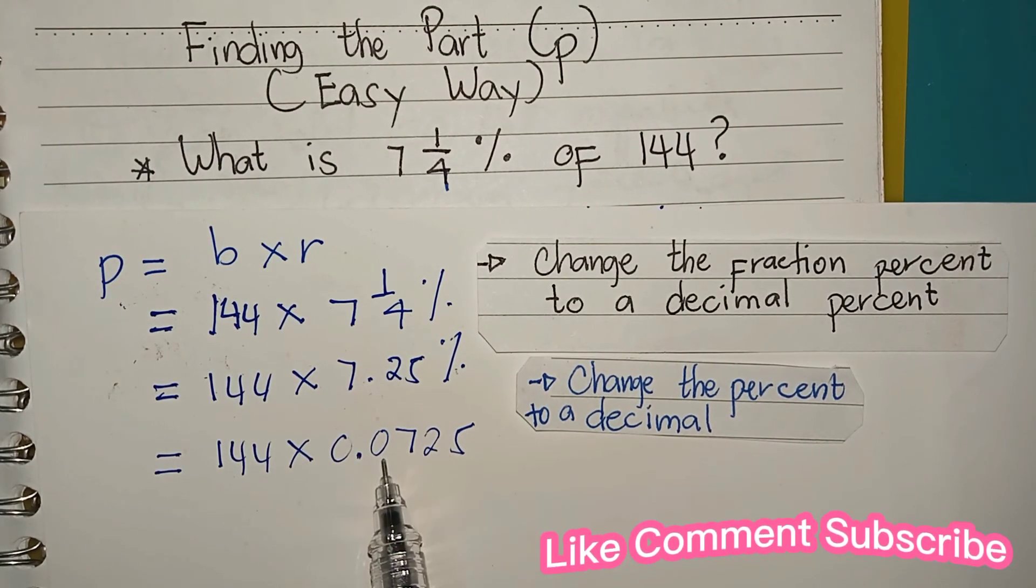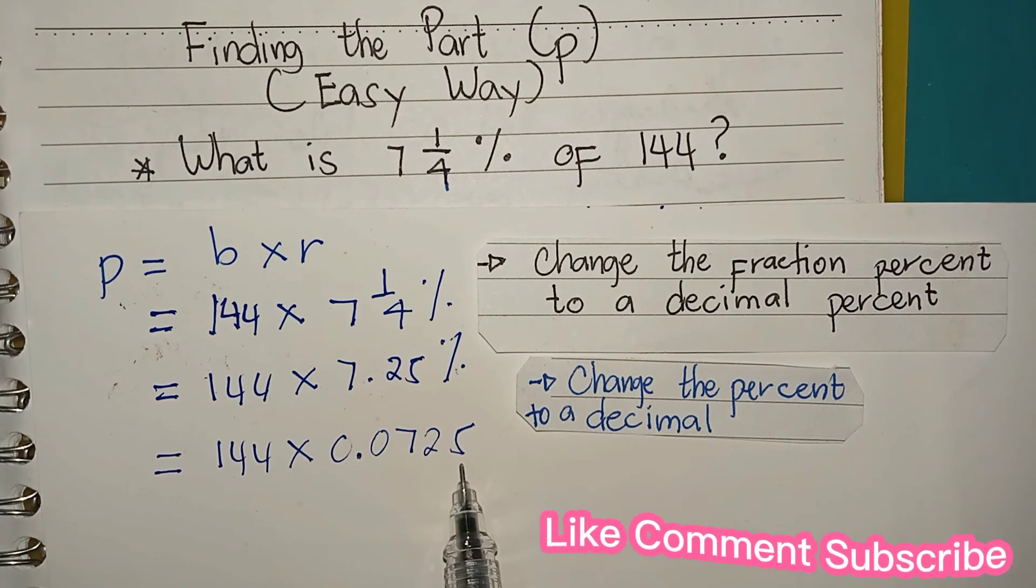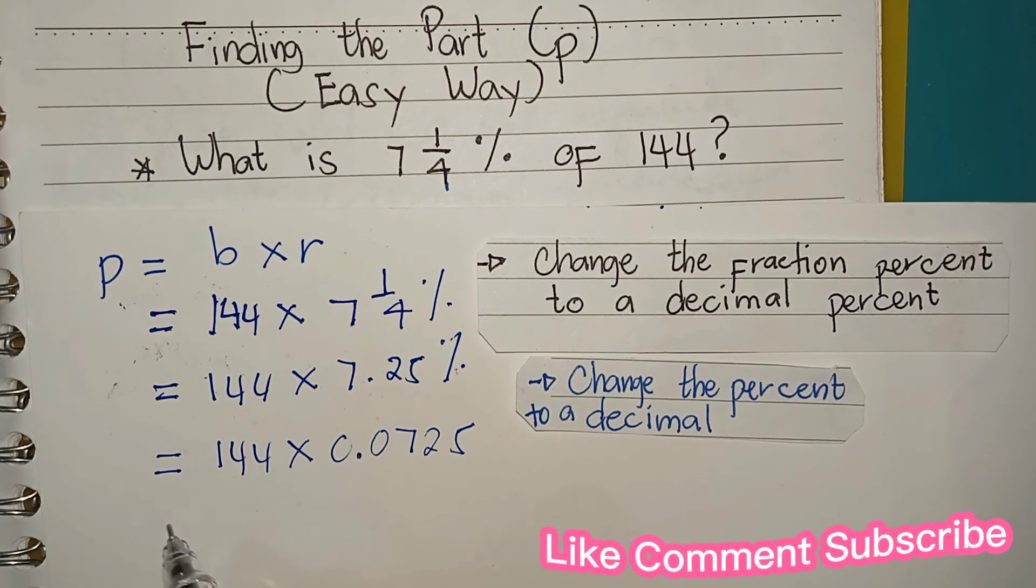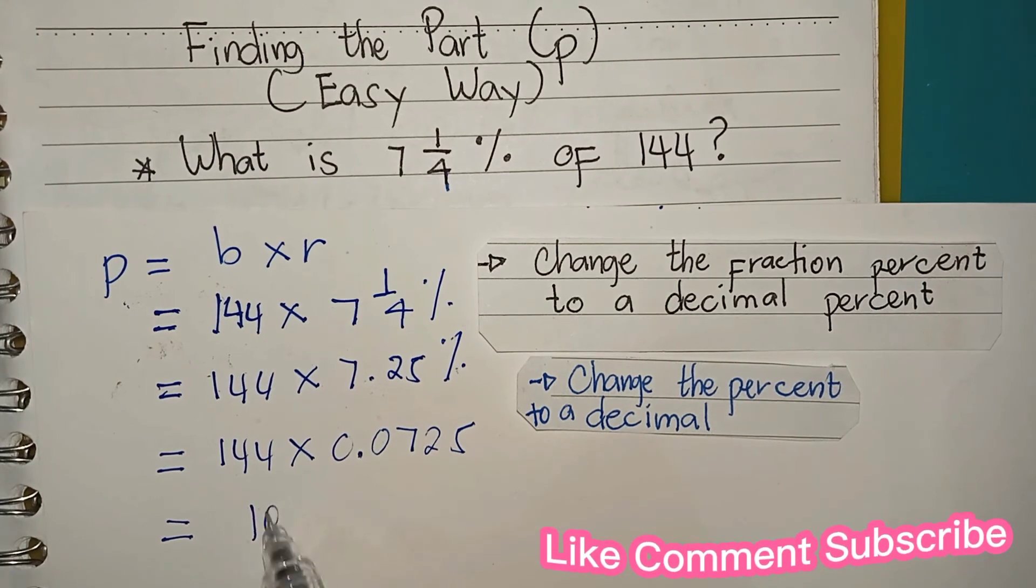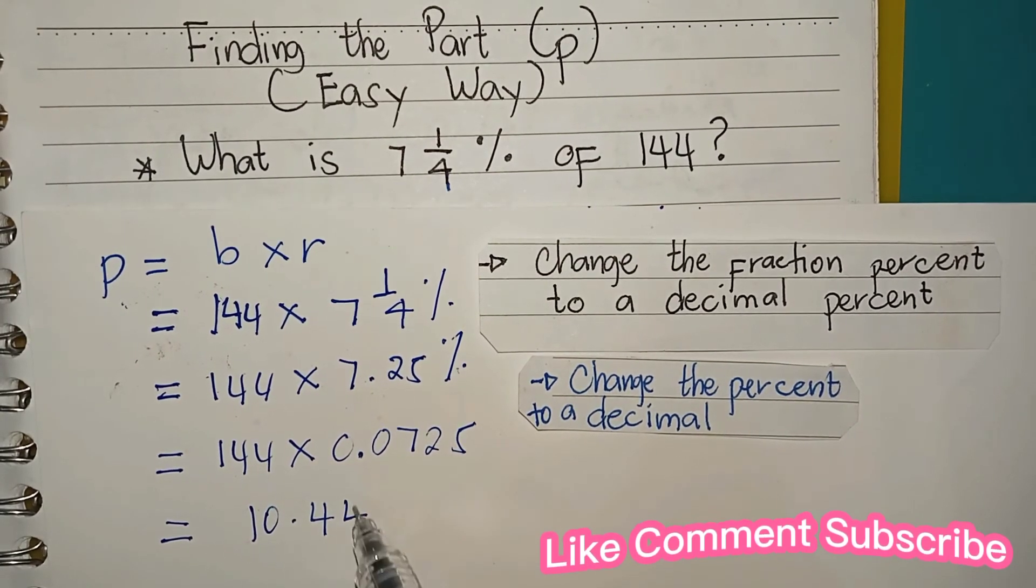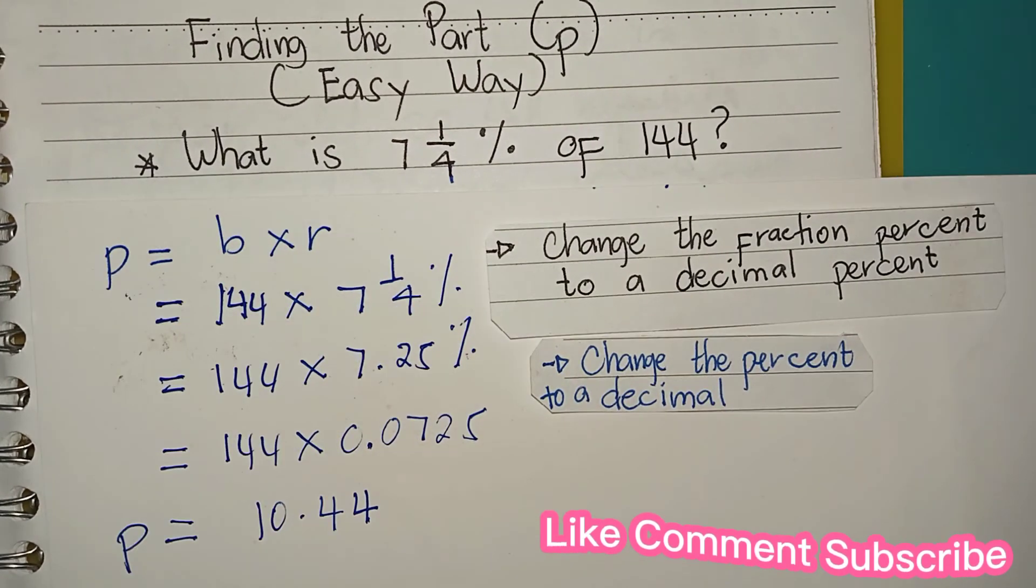Just multiply 144 times 0.0725. The final answer is 10.44.